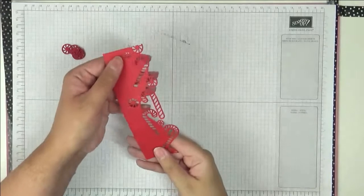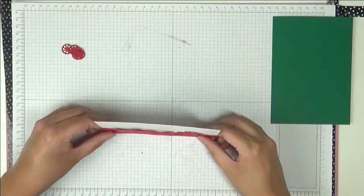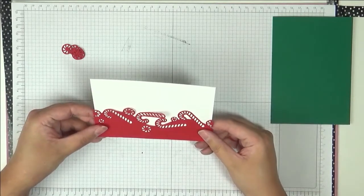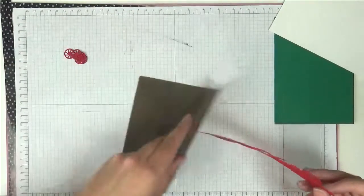Now I'm going to bring back the rest of my stuff. I've got a piece here of Whisper White and this measures fourteen point three five centimeters by ten centimeters. I'm just going to stick down my die cut to that.